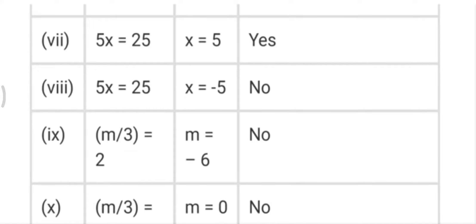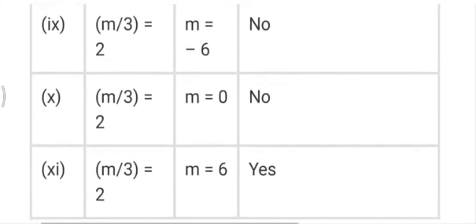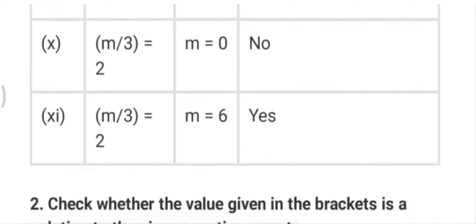In the eighth part, we put x=-5, so 5 into -5 is -25 which is not equal to 25, so we write no. For m/3, if we put m=-6, it gives -2, which is no. If we put m=0, then 0/3=0, not 2. If we put m=6 it will be yes.